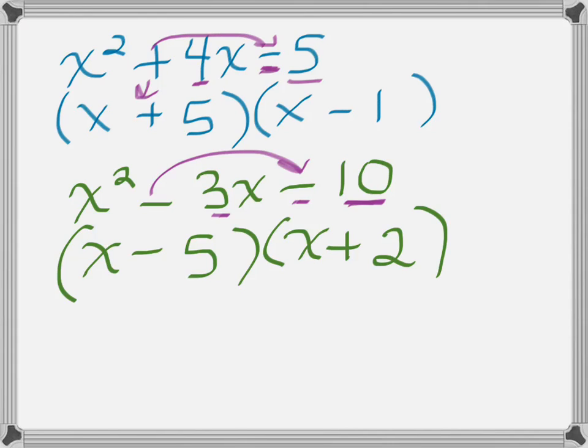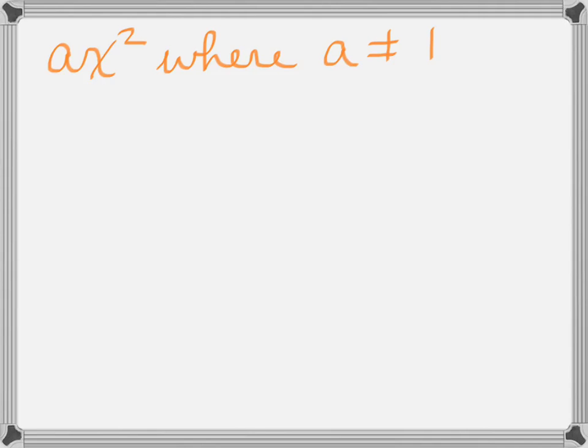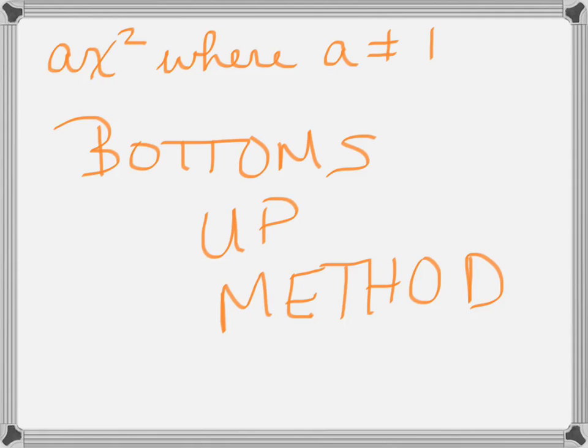So those are pretty easy, and you should have learned most of this in Algebra 1. Now we're going to move on to where a is not equal to 1 — ax squared where a ≠ 1. While there are a number of ways to factor these trinomials, the first way I'm going to teach you is called the bottoms up method.